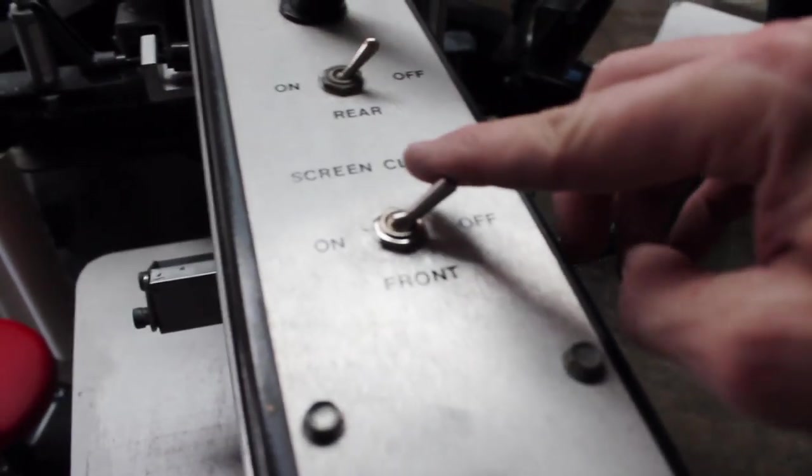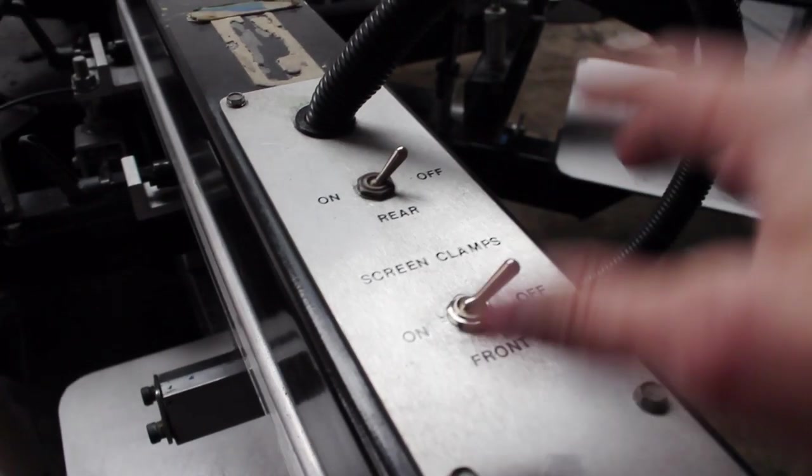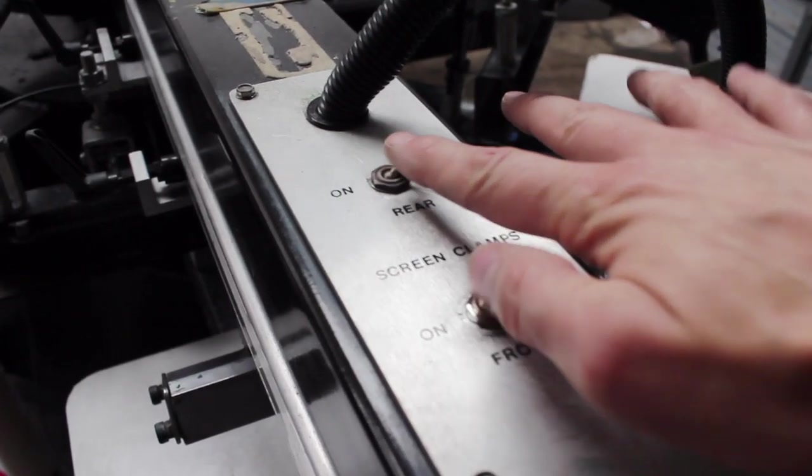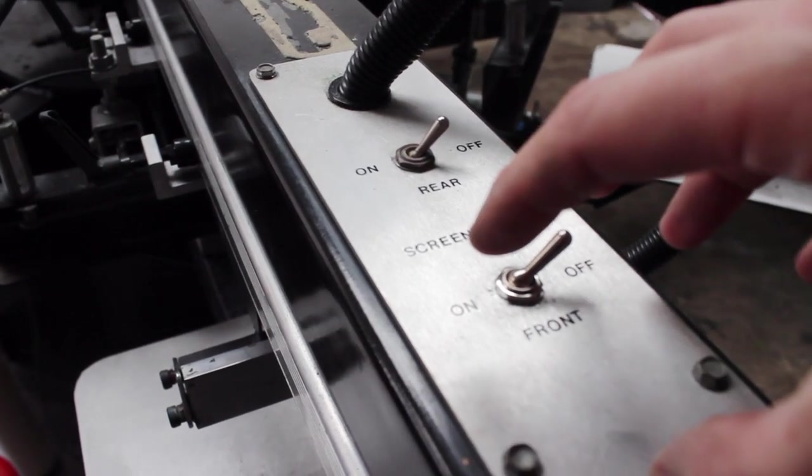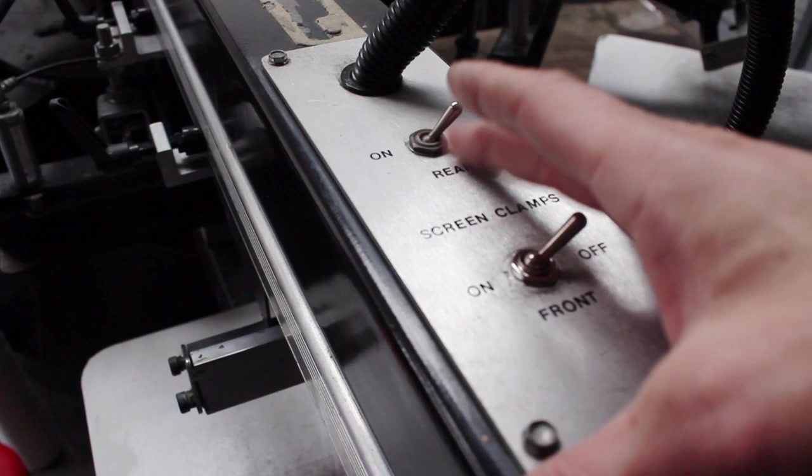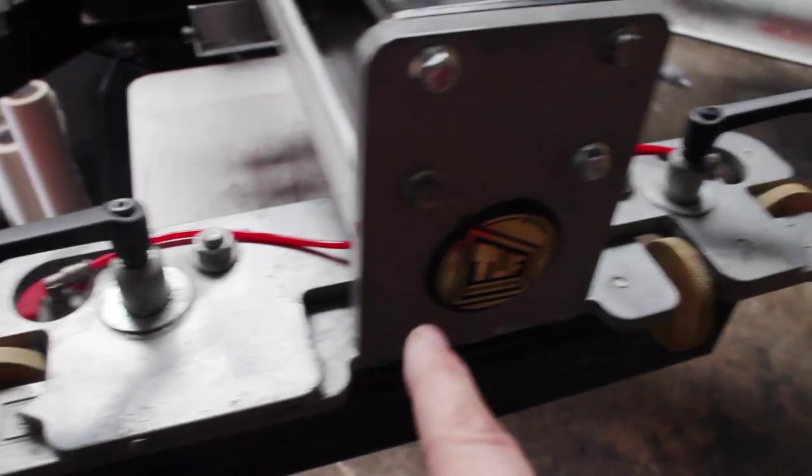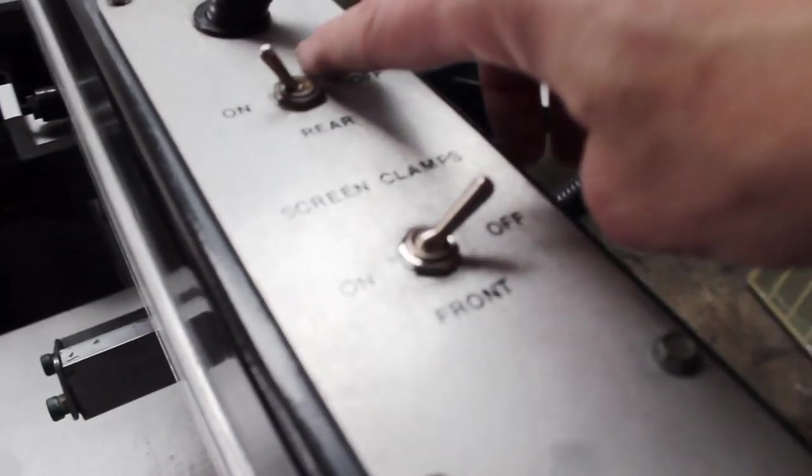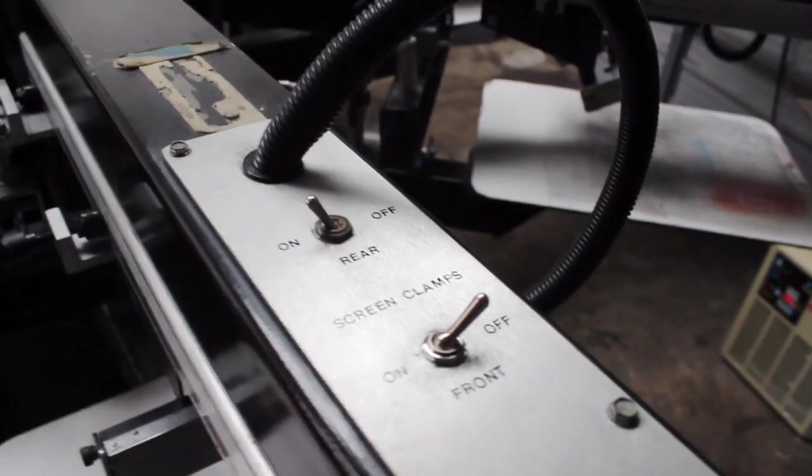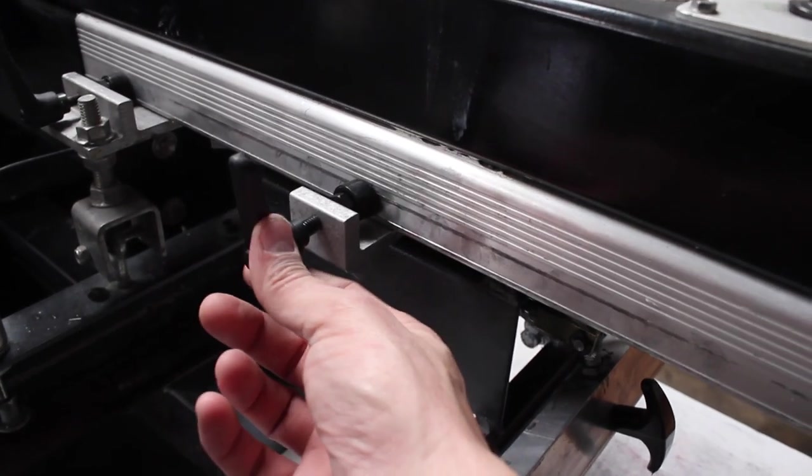Then we have the rear and front screen clamps. Generally when you're registering up a job, you can turn both these on. Once you feel you have everything registered, if you do find that you need to make some micro adjustments, turn the rear off and then make your adjustments here on your micro registrations up front. Once you got it all in place, turn your screen clamp back on.